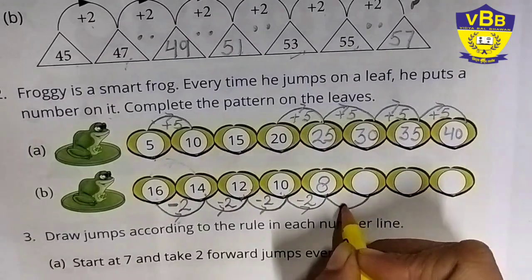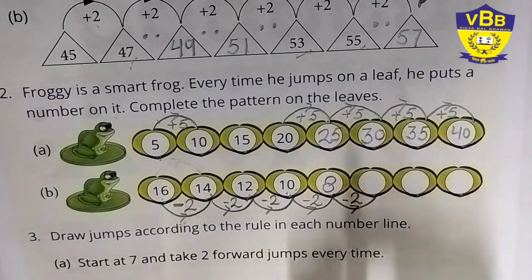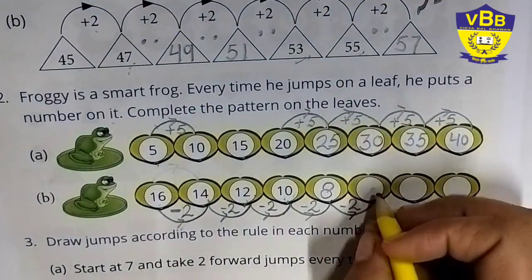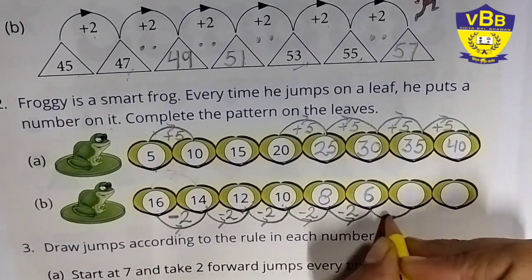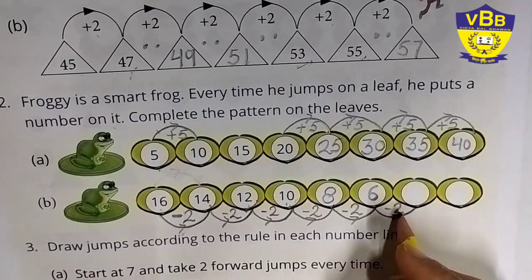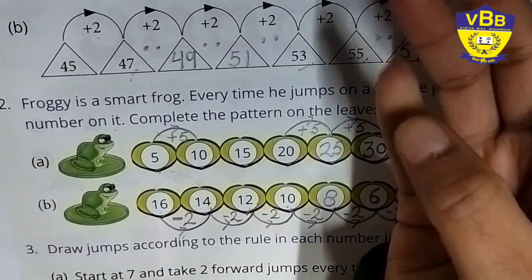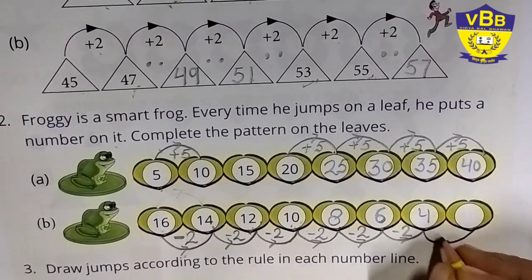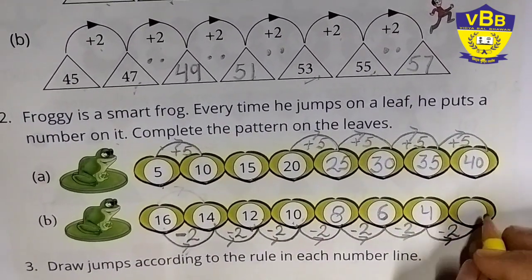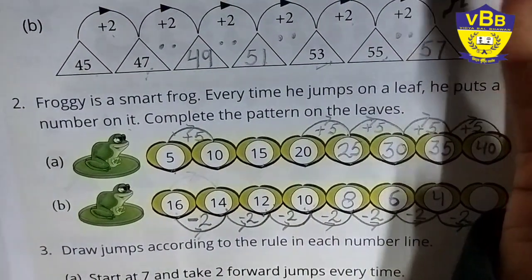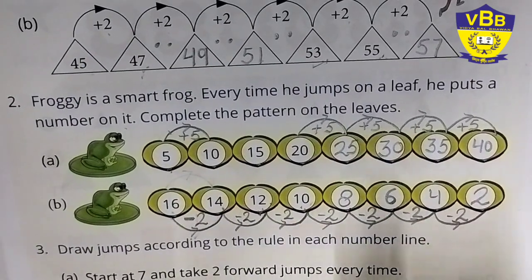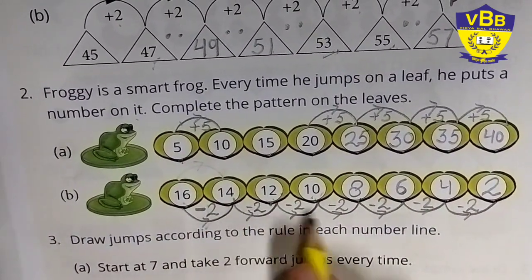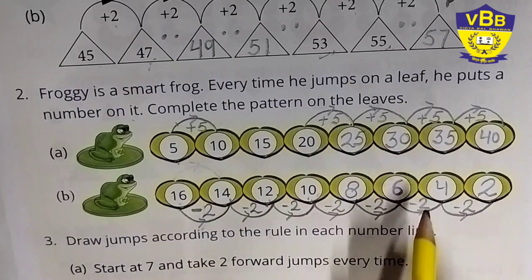Follow the same rule again. Count before 8: 7, 6 — write 6. When we subtract 2 from 6, count: 5, 4 — write 4. And when we subtract 2 from 4, count: 3, 2 — write 2. You can observe the rule we are following here: every time we have to subtract 2. And this is called the decreasing pattern.